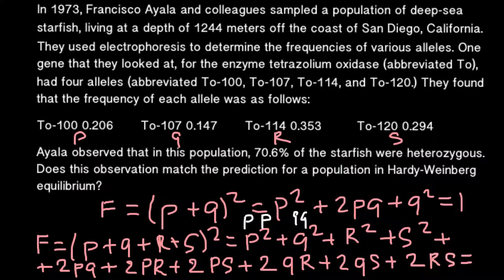All these homozygous and heterozygous genotype frequencies, when added together, equal 1 — just like in the binomial expansion formula. We are going to use only this expanded four-allele formula today, focusing on the heterozygous portion, since we need to find the predicted frequency of all heterozygous genotypes.